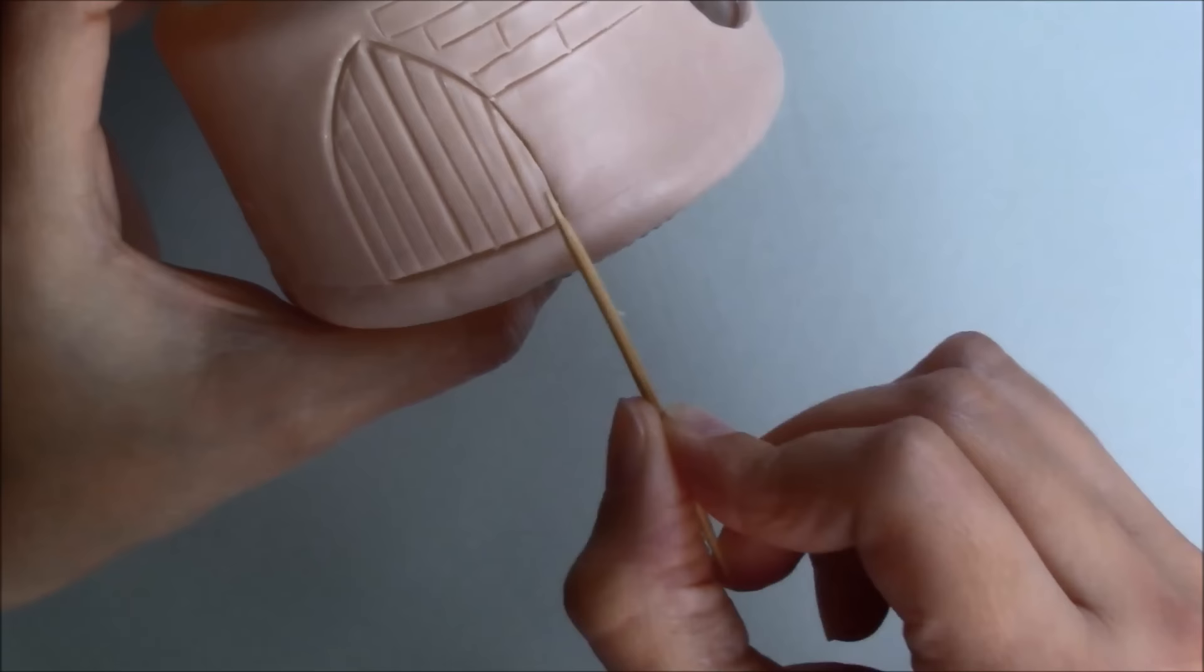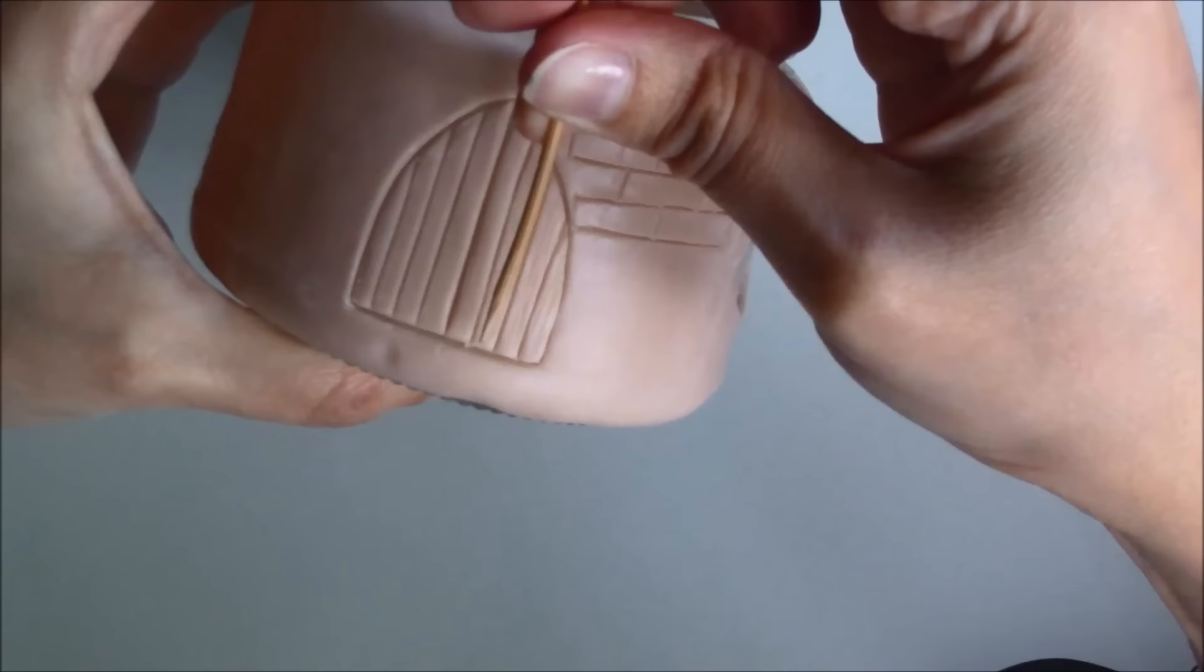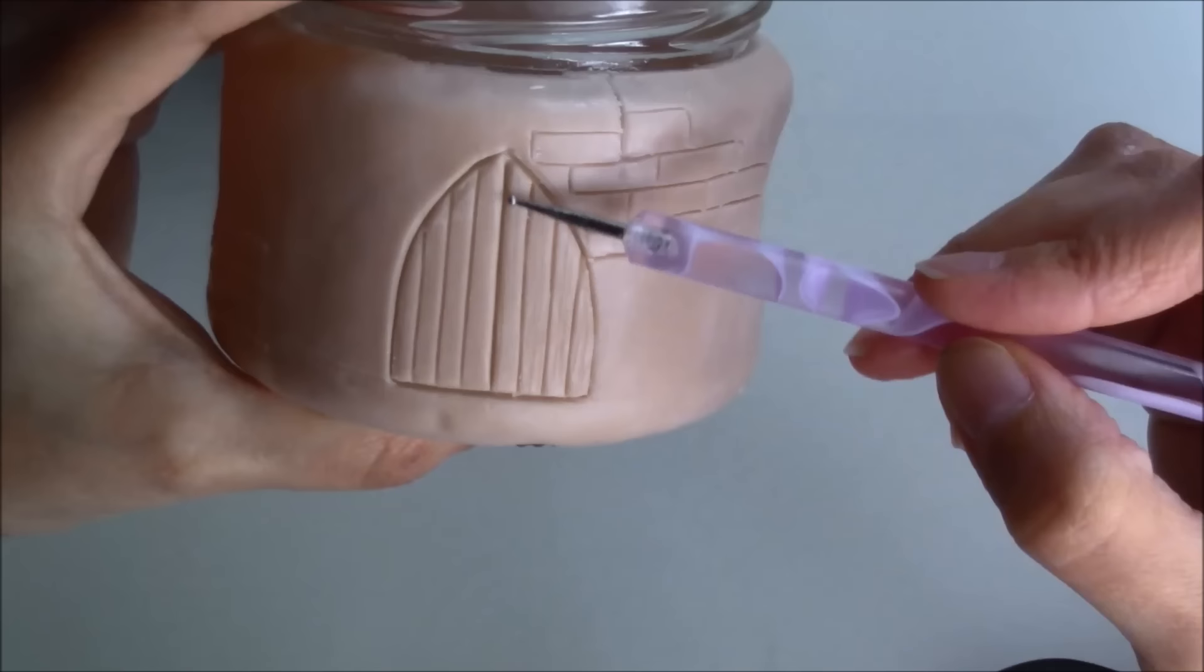Still using a toothpick, I added texture to the door, making shorter and softer lines. You can also use a small ball tool.